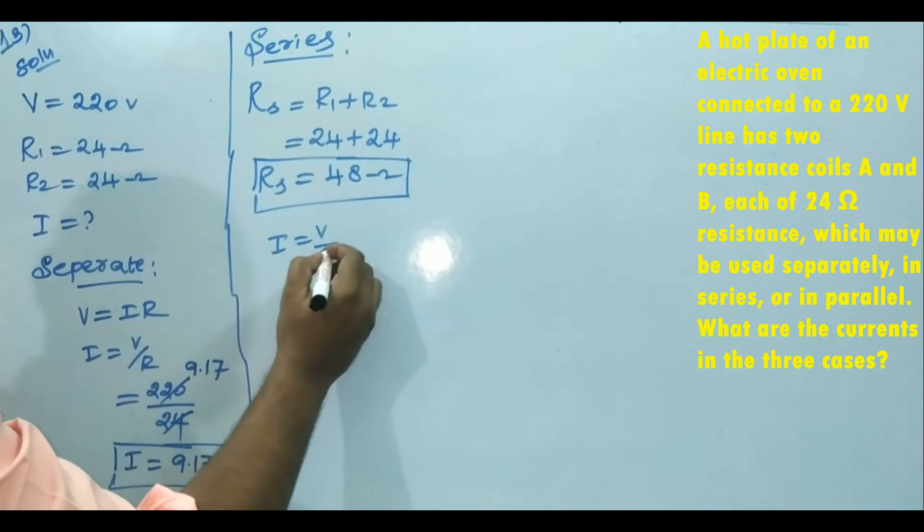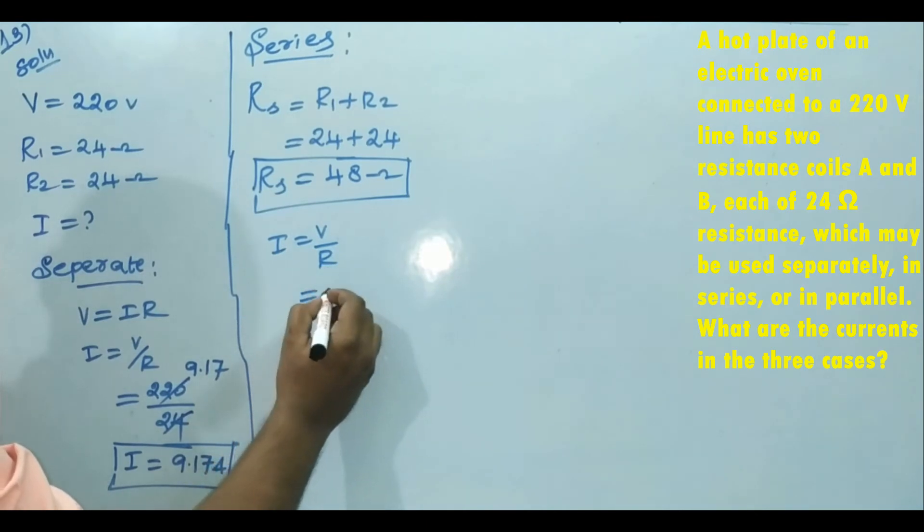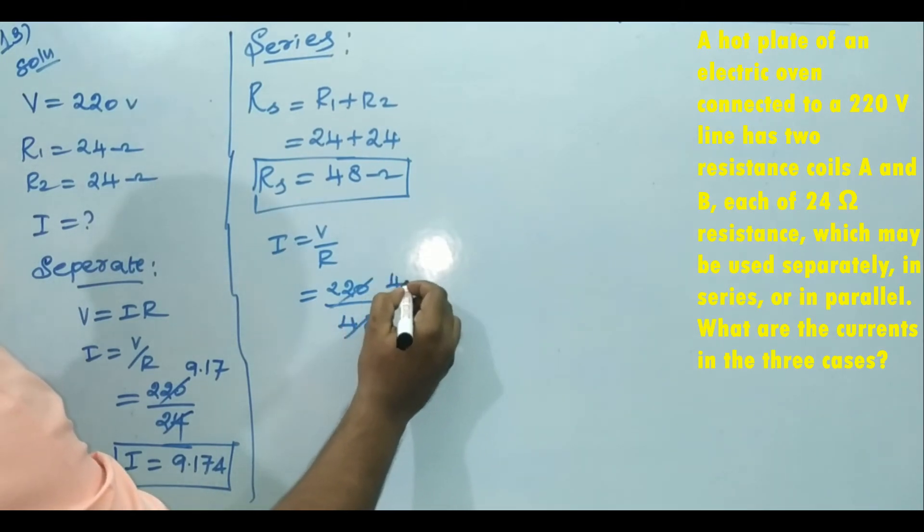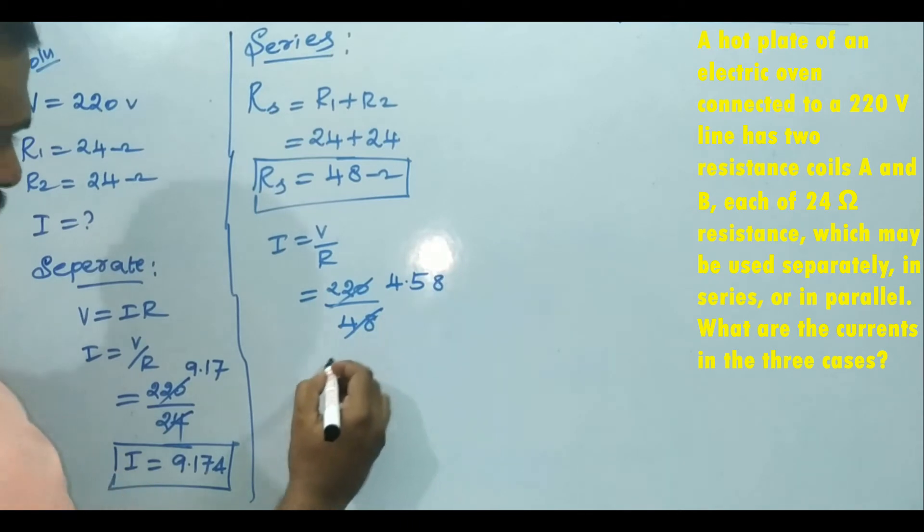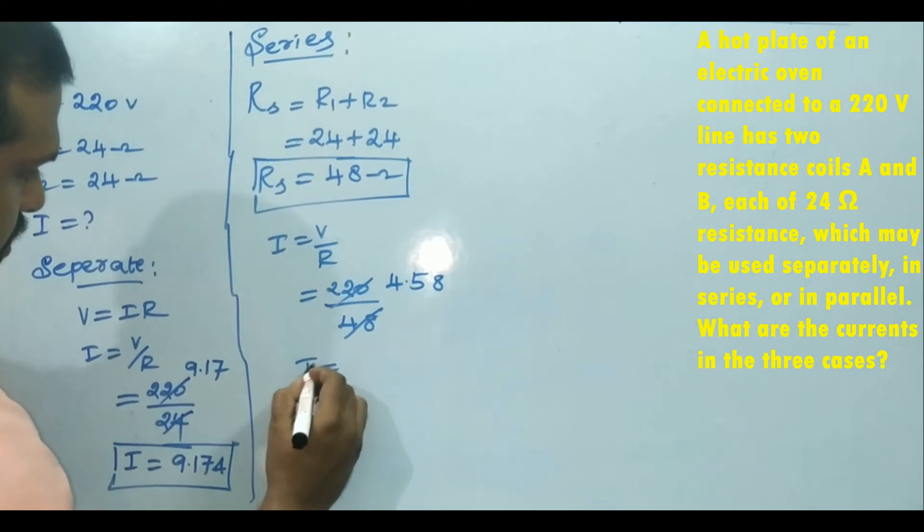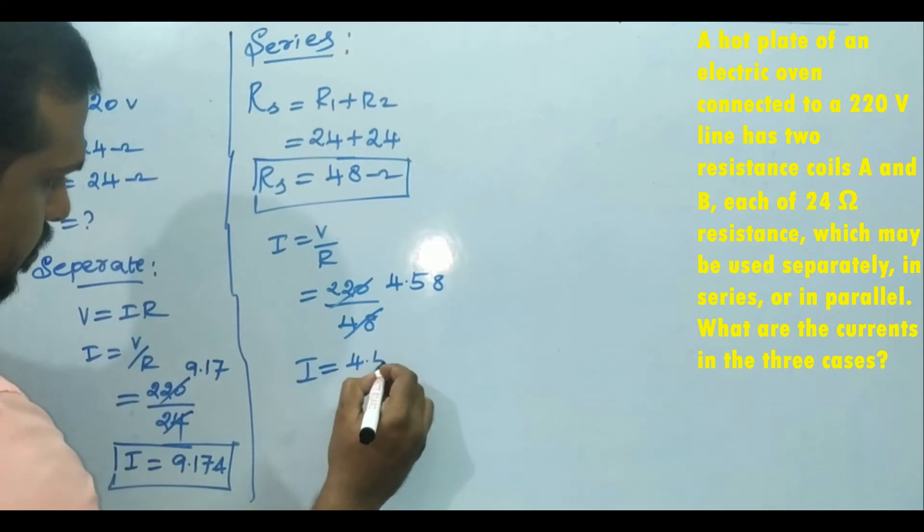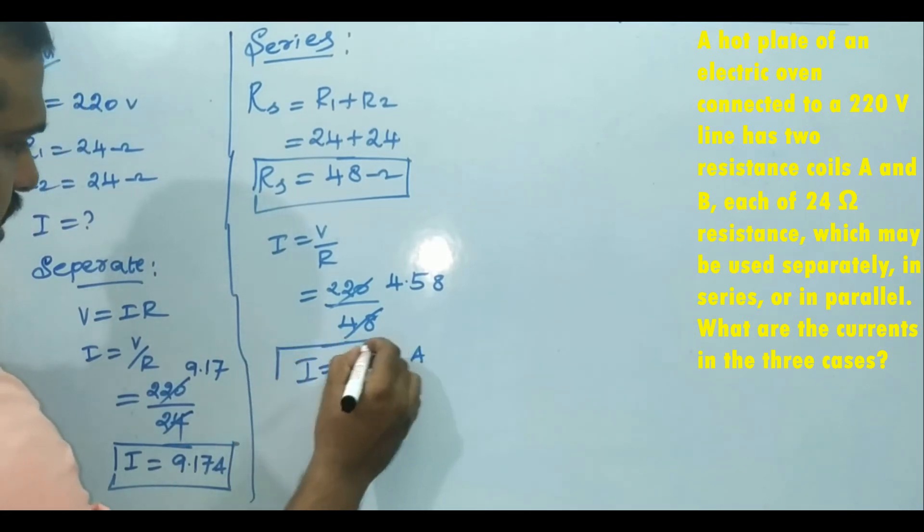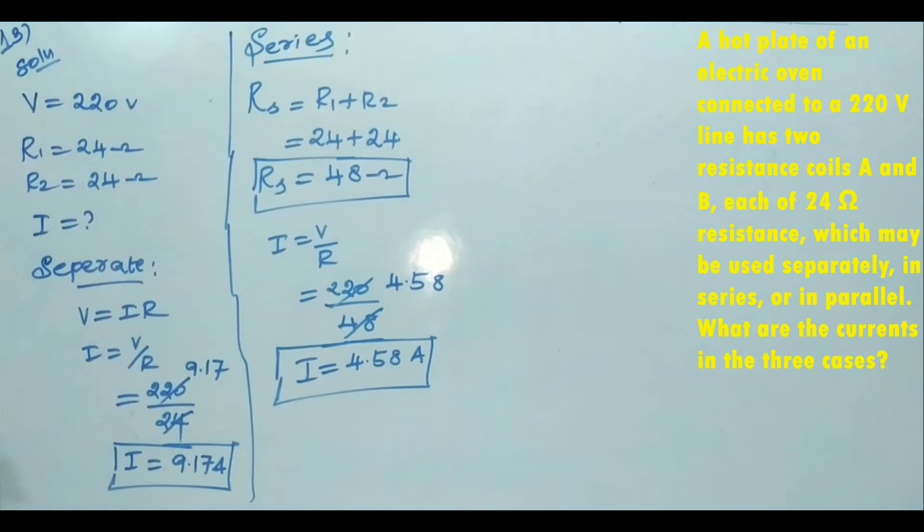Then I equals V by R. V is 220, R is 48, equals 4.58. So if we connect these two resistances in series, then the current will be I equals 4.58 ampere.